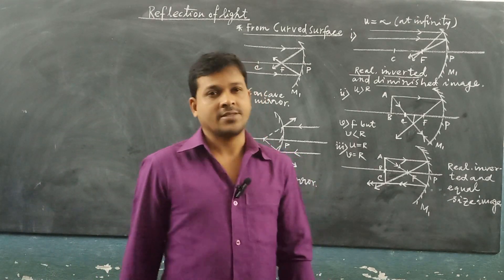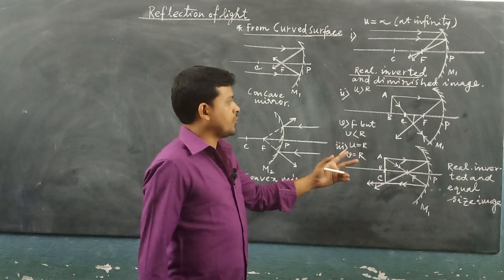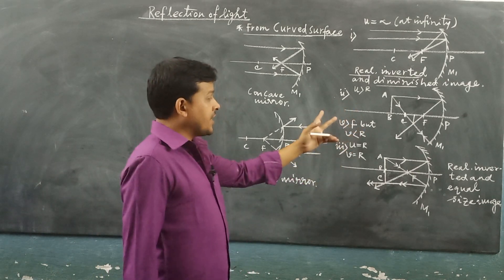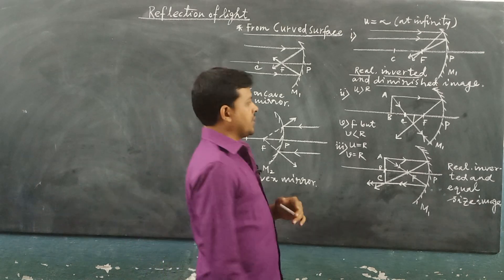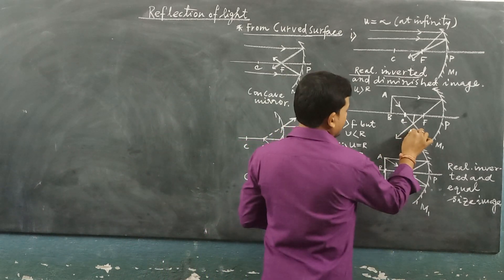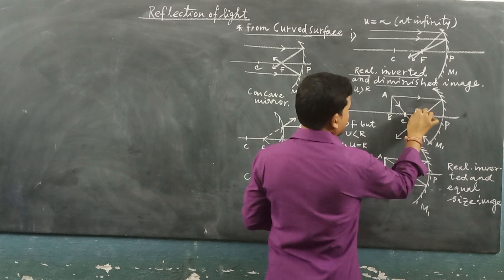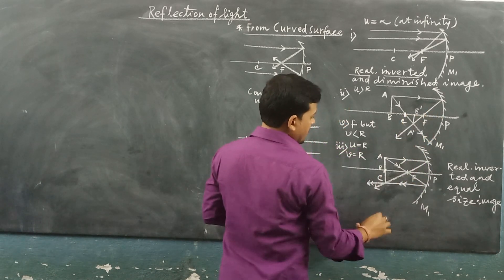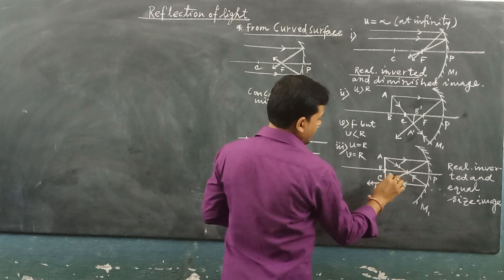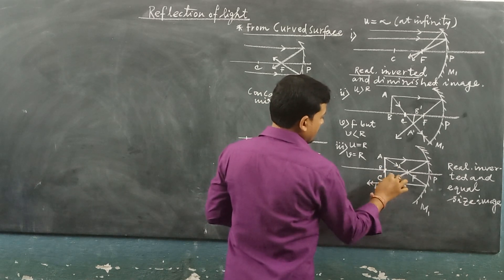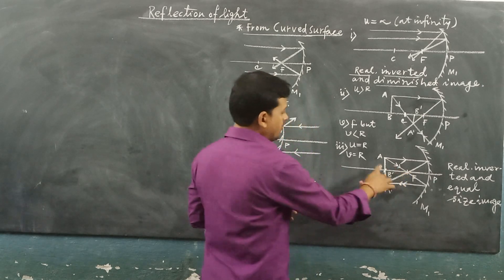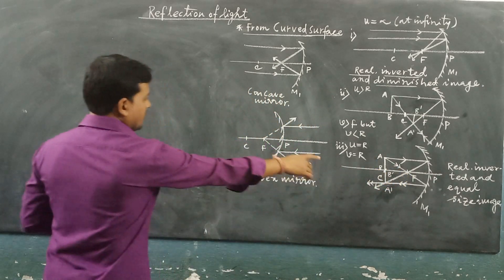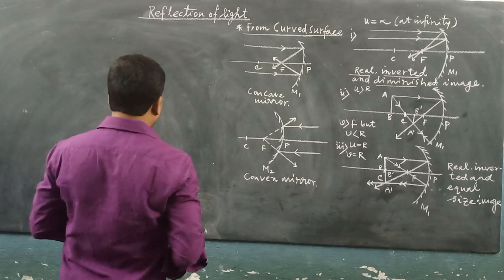In the previous class, when we drew the ray diagram of the formation of image by using a concave mirror, the images are A prime and B prime. So A prime B prime is the image. P prime and B are the same point for the ray diagram where U equals R.